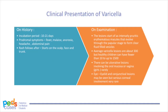Now that we understand the pathophysiology of the virus, let's review the clinical presentation. On history, after an incubation of 10 to 21 days, the patient may experience a prodrome consisting of fever, malaise, anorexia, headache, and abdominal pain. Incubation is then followed by a rash that typically starts on the scalp or face and spreads to the trunk — classically described as centripetal in distribution.